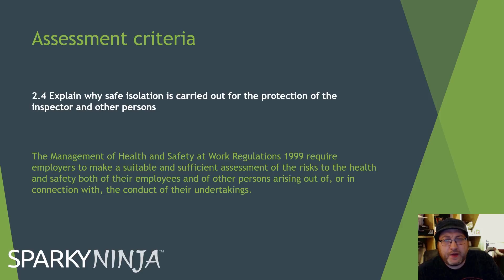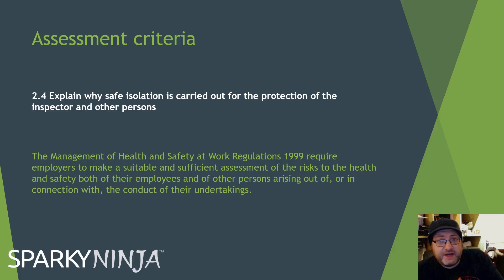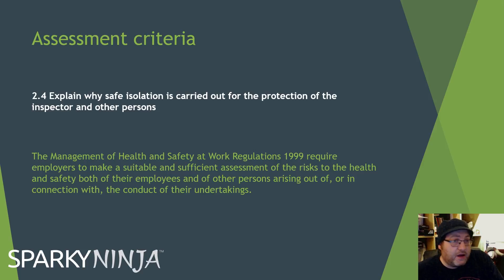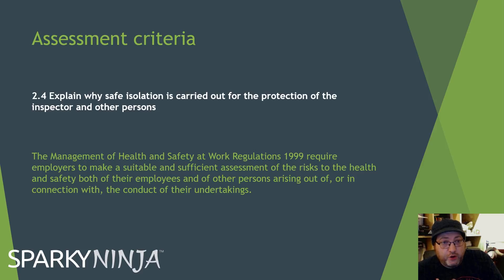2.4: Explain why safe isolation is carried out for protection of the inspector and other persons. There are two people here — the inspector and other persons. It's all about controlling risk. The Management of Health and Safety at Work Regulations requires employees to make an efficient assessment of risk. We think about permits to work — permits must only be permitted for safe work. We do not permit live work, we sanction live work. If you're going to do work under a permit to work, you must prove it as safe.